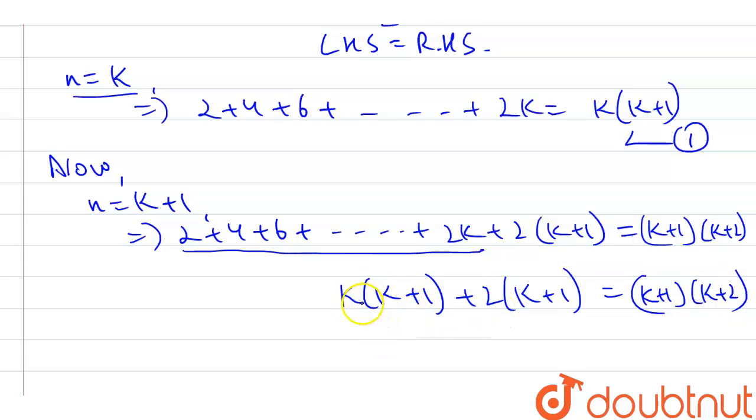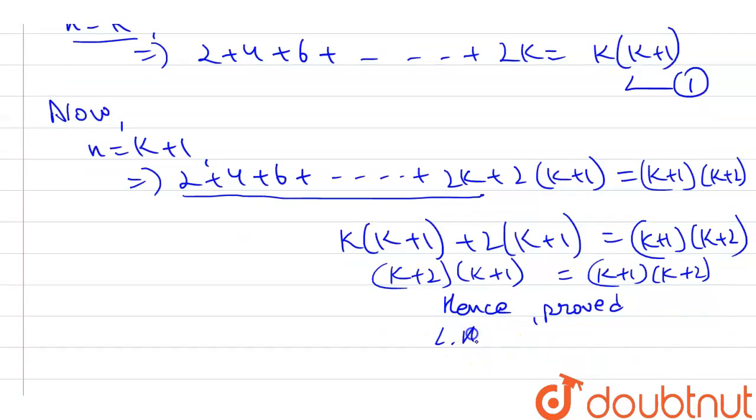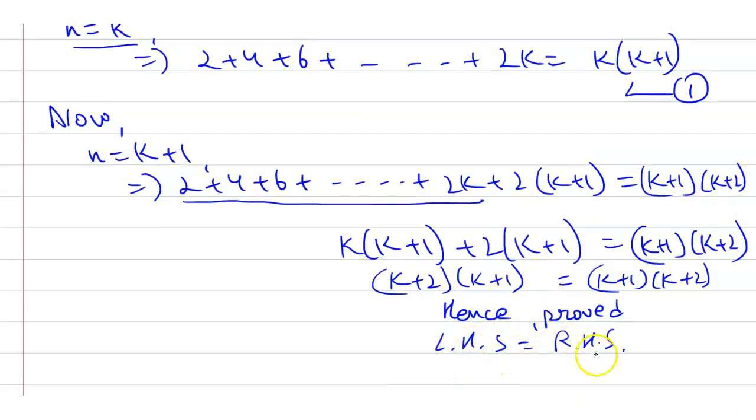As you can see, this becomes (k+2)(k+1) = (k+1)(k+2). Hence proved, since LHS equals RHS. Therefore, by using PMI, the equation is proven.